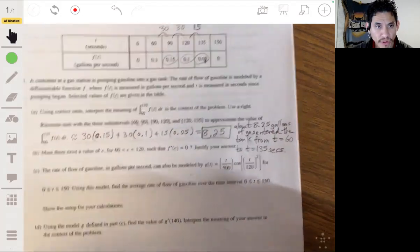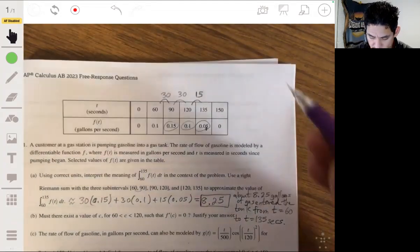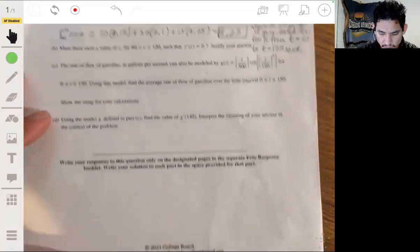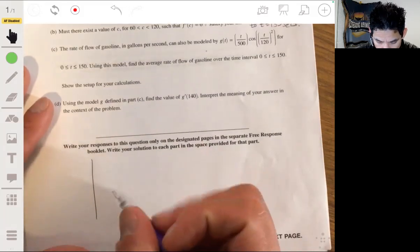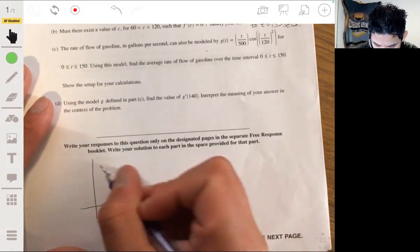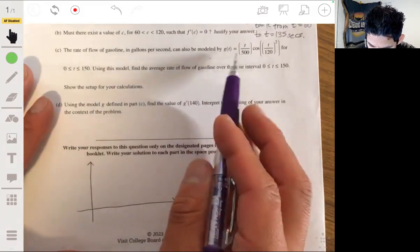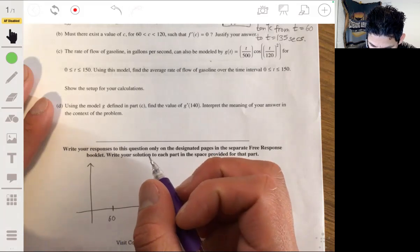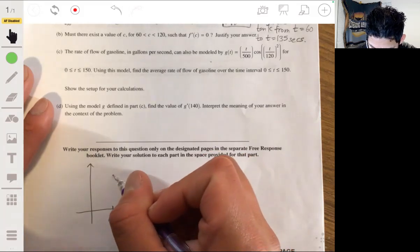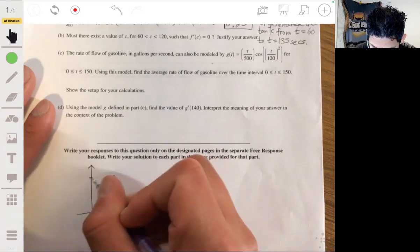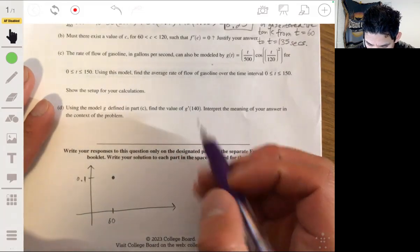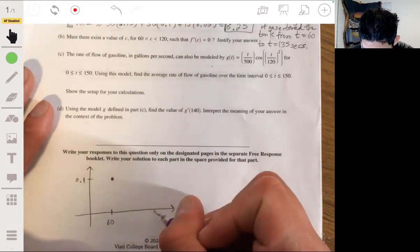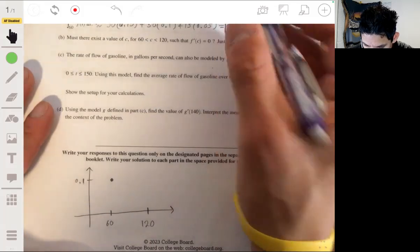So, for example, let me just put it down here so you can get a good clear picture of what's going on here. Let me draw a sketch. So at 60, the value is 0.1. And then at 120, the value is also 0.1.